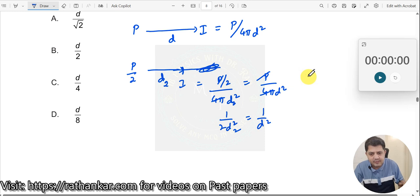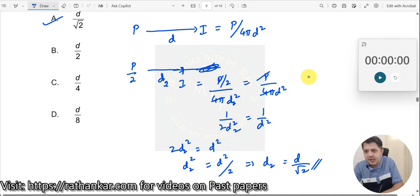So, therefore, now solving this, we get this as 2d2² is equal to d² or d2 should be equal to d divided by square root 2. D by square root 2 is option A.